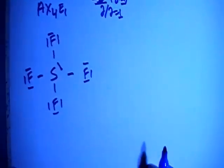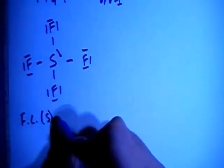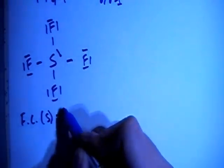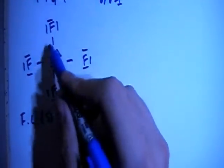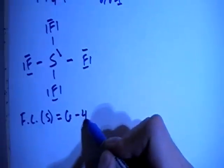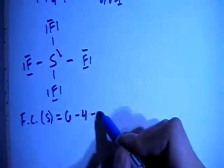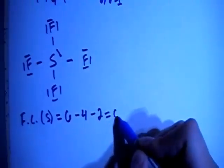Now let's check the formal charges to make sure this is the correct structure. The formal charge on the sulfur is 6 valence brought in minus 1, 2, 3, 4 bonds minus 2 non-bonding electrons, for a formal charge of 0.